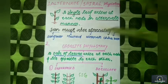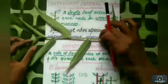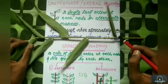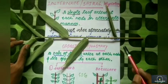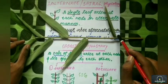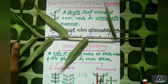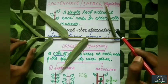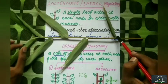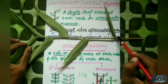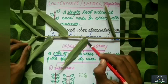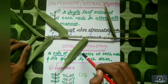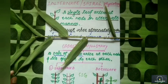If we look at this plant, one leaf arises from each node, but in an alternate manner. Alternate manner means: if at one node the leaf is on the right side, then at the next node the leaf is on the left side — so left, right, left, right in this fashion.